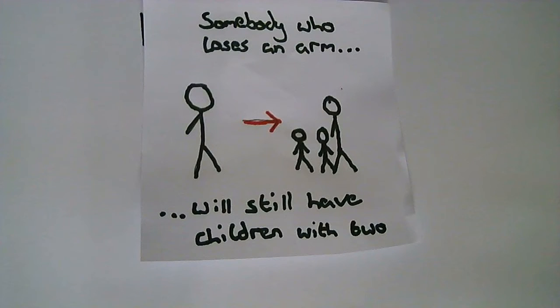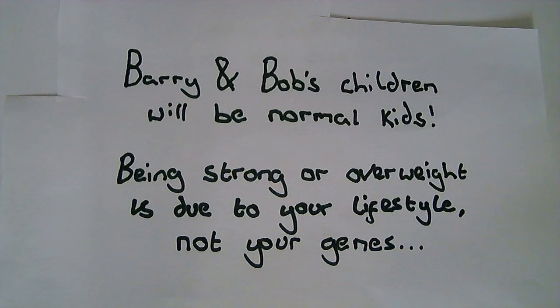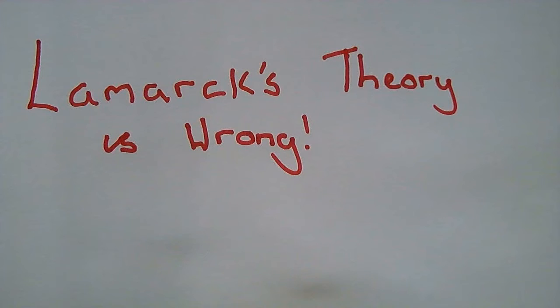However, we know this isn't the case, because somebody who may lose their arm in their lifetime will still have children with two arms. They don't have them with one. So Barry and Bob's children will be normal, they won't be overweight, nor muscular.